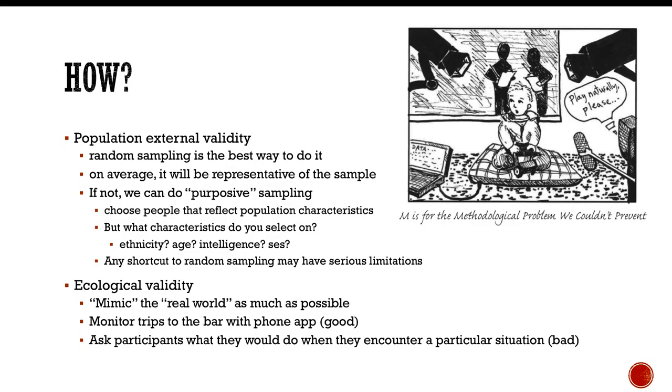As far as ecological validity, how do we maximize ecological validity? Well, what we do is we mimic the real world as much as possible. So for example, there is an app that monitors trips to the bar and that is their measure of alcohol consumption. Well, that has high ecological validity because people usually carry their phones anyway, and people usually go to the bar anyway, at least if they're that kind of people. So in that situation, it has high ecological validity.